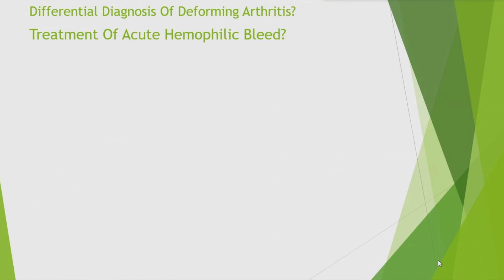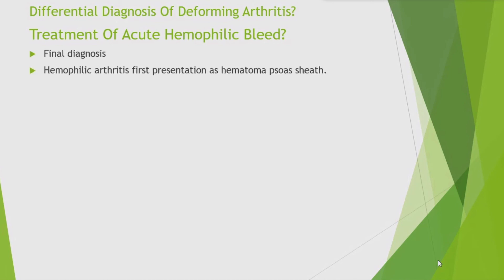What are the differential diagnoses for deforming arthritis? Rheumatoid arthritis, spondyloarthritis such as ankylosing spondylitis, psoriatic arthritis. Osteoarthritis can also produce deformity — genu valgus in the knee joint, and distal interphalangeal joint deformity. Common sites of osteoarthritis: knee, hip, lumbar spine, cervical spine, DIP joints.